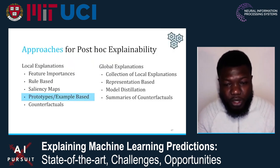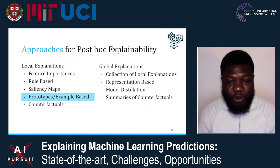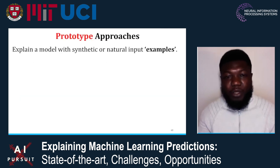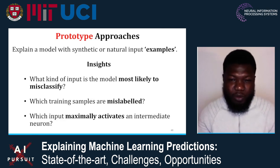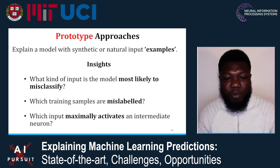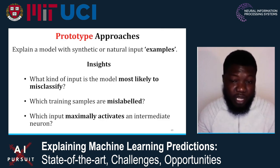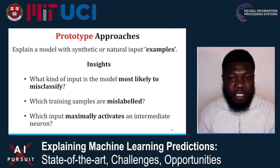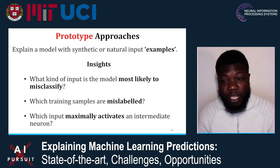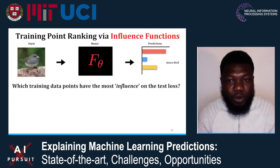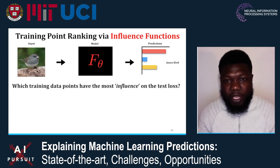That concludes the discussion on saliency map techniques. Let's now do an overview of what we call prototype or example-based methods. These are methods that explain a model with examples, and they can answer questions like: what inputs are misclassified or mislabeled in the training set? Or: generate a synthetic example that maximally activates a particular neuron. One method we'll look at in detail is training point ranking via influence functions.